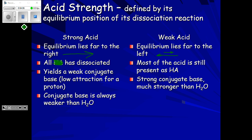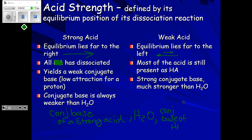Weak acids make great conjugate bases — their conjugate bases are much stronger than water. So we have the conjugate base of a strong acid, then water, then the conjugate base of a weak acid (HA), and then any strong base that has hydroxide as part of it. This is the order of increasing base strength.